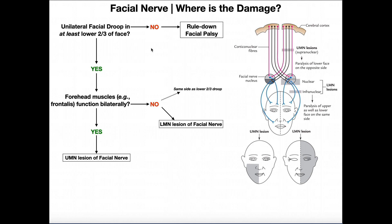Even when you're not actively making a facial expression, there's always muscle tone. But if you were to lose that tone — which could be through a lesion of an upper motor neuron or a lower motor neuron — loss of that tone is going to cause something called facial droop.